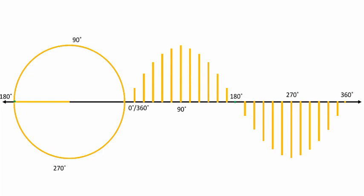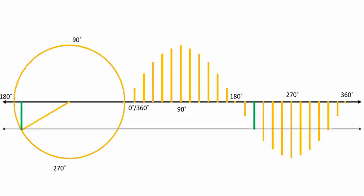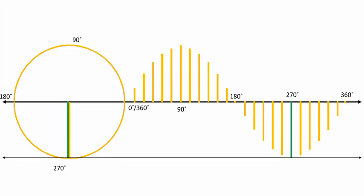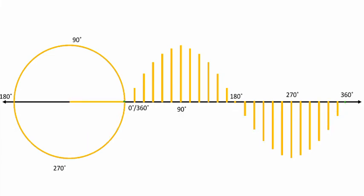Increasing the angle beyond 180°, the green lines appear again but this time headed toward the negative y-axis, giving a negative value of the sine function. As the angle increases further, the sine value decreases further. When the angle reaches 270°, the sine function equals negative 1. Then, increasing the angle from 270°, the sine function starts increasing again, becoming 0 when the angle reaches 360°.